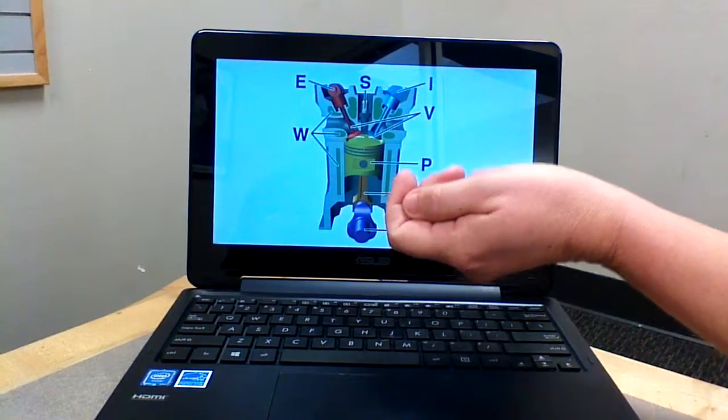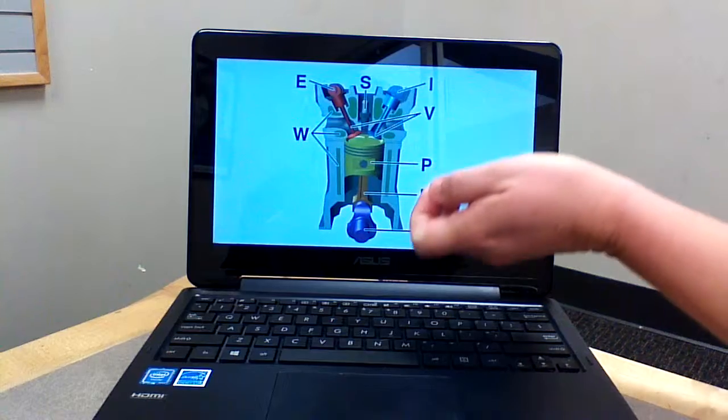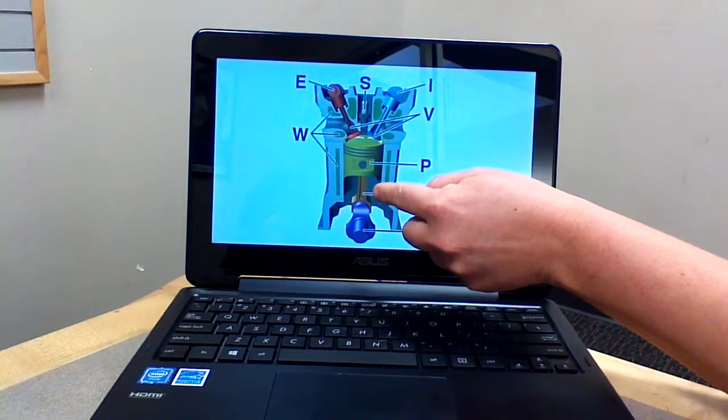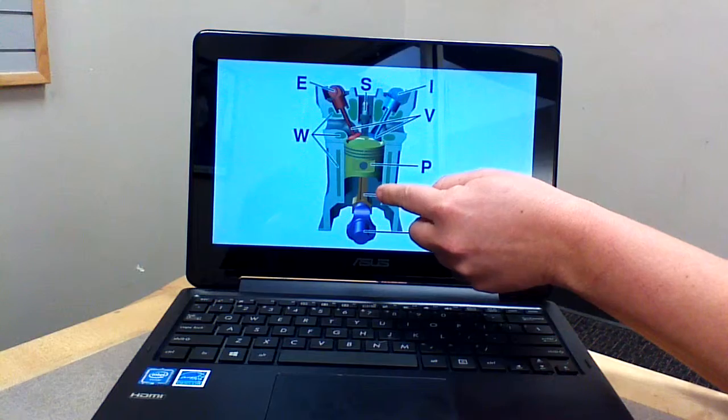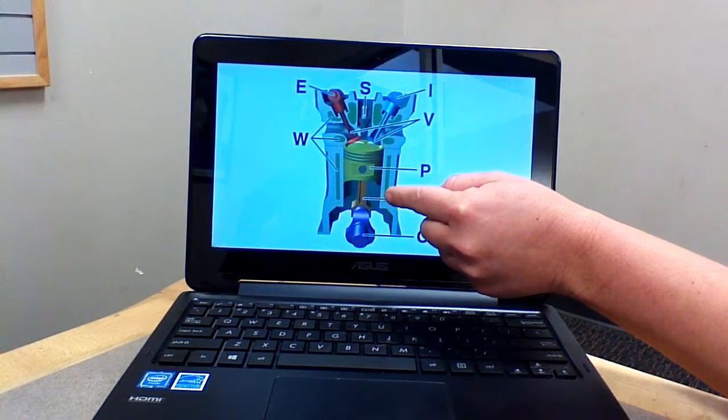Then we have your connecting rod. This is powered by the gas explosion. It transmits the thrust from the piston to the crankshaft.